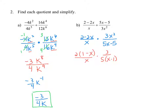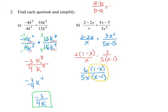Simplifying gives us 6 times the quantity 1 minus x in the numerator, and 5 times x minus 1 in the denominator. You should recognize a property from the previous section: a rational expression in the form of a minus b over b minus a simplifies to negative 1. So the expression 1 minus x over x minus 1 simplifies to negative 1, and our final simplified rational expression is negative 6 over 5x.